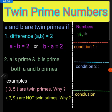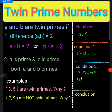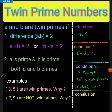Now consider another example: 13 and 15. Fifteen minus thirteen equals two, so the first condition is satisfied. The second condition: 13 is prime, but 15 is not prime, because 15 equals one times fifteen and also three times five. Hence, the conclusion is 13 and 15 are not twin primes.